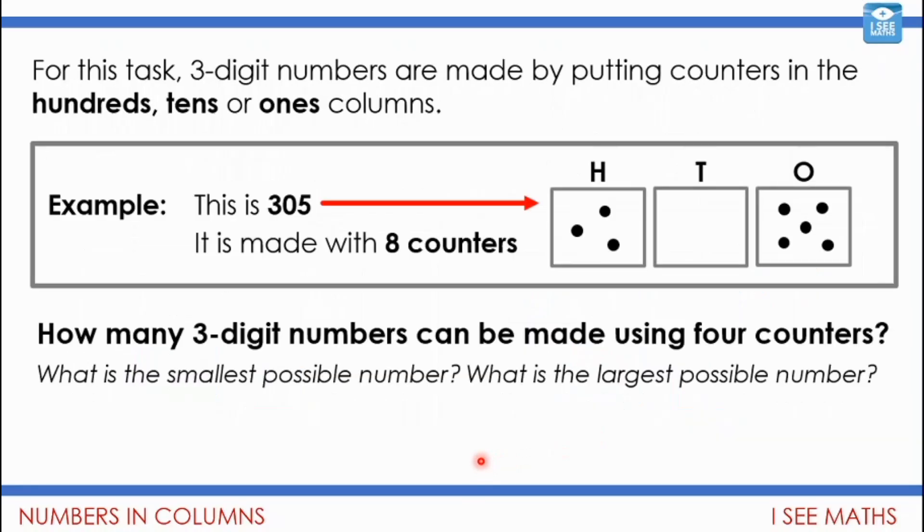Okay, so here's your main task that we're going to work through. And the challenge is finding all the different possible answers. So I wonder if you can get there. So for this task, three-digit numbers are made by putting counters in the hundreds, tens, or ones columns, just like we've been doing. So here's another example. But look, this one's slightly different. So this is 305. It's made with eight counters. So this is a three-digit number, but you notice there aren't any tens, so my number is 305. But it's still a three-digit number because I've got hundreds.